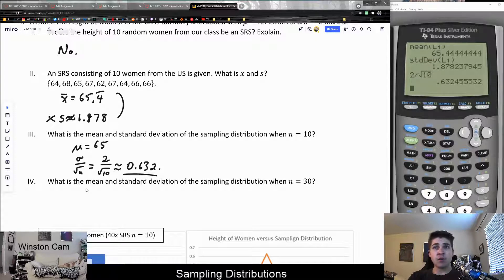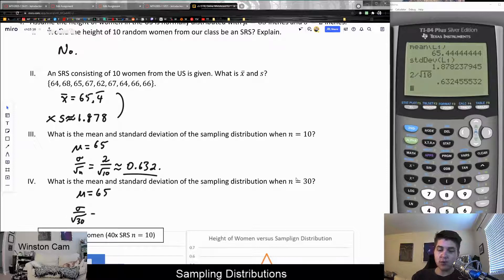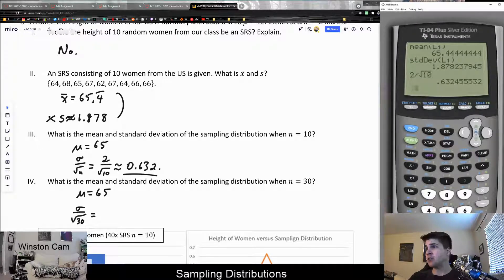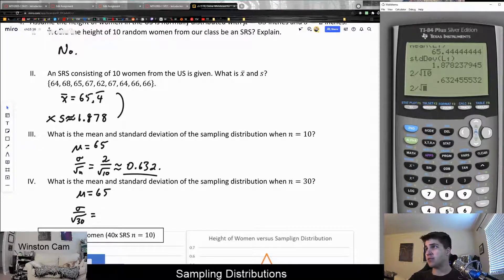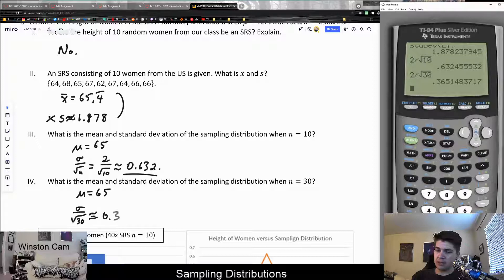Another thing is what's the mean and standard deviation of the sample distribution when n is equal to 30? Well, again, the mean will never change. But the standard deviation will get smaller and smaller. Because the more data points we use in our sampling distribution or in each individual sample, the less likely it has to be different, the more closely clustered to the center we will have it. And so, again, we do 2 divided by the square root of 30 to answer this question. And we would get approximately 0.365.